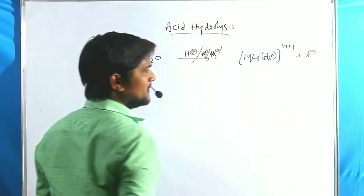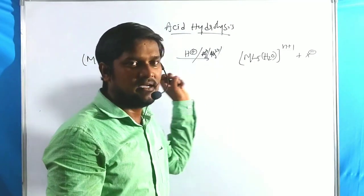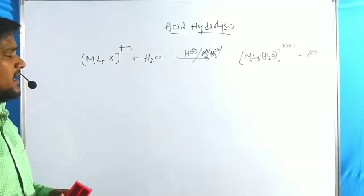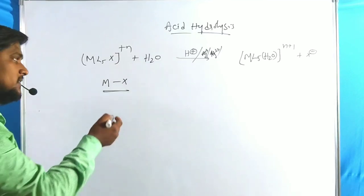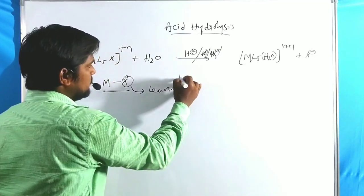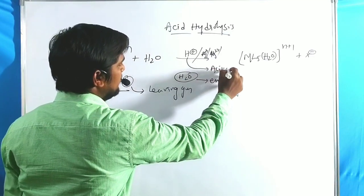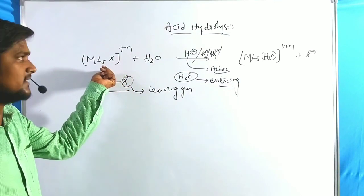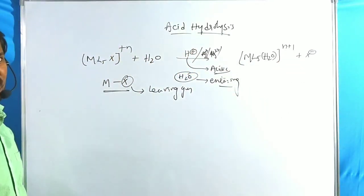In the reaction, we get ML5(H2O) with charge n+1 and X⁻ as the released anion. The charge becomes n+1 because the loss of X⁻ reduces the negative contribution by one, so the overall positive charge increases by one. In acidic medium, water replaces one of the coordination sites of the octahedral complex through a substitution mechanism, giving ML5(H2O) with the increased charge.